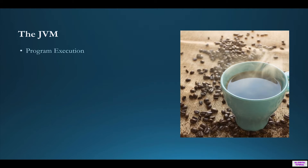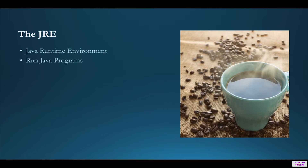Now let's learn about the JVM, or Java Virtual Machine. The JVM is the Java platform component that executes the program — in other words, the execution of the program is the responsibility of the JVM. The JRE, or Java Run-Time Environment, is a package of everything necessary to run a compiled Java program, including the Java Virtual Machine.